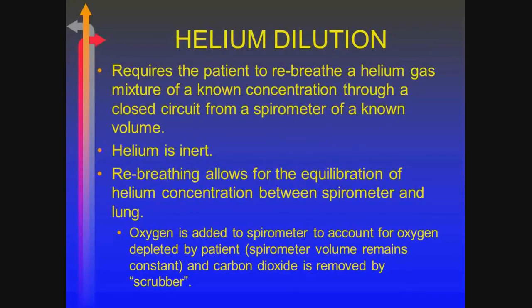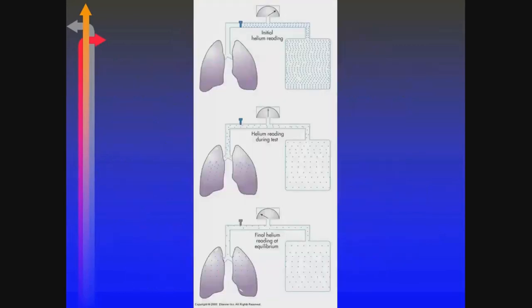Helium dilution — the thing I want you to remember is that it's a closed-circuit. Because it's a closed-circuit with rebreathing going on, you have to have something to scrub out the CO2 as well as to replenish oxygen. Otherwise your patient is going to pass out, which is never fun. You just keep rebreathing until an equilibration exists between the quantity of helium inside the patient and the quantity inside the spirometer.